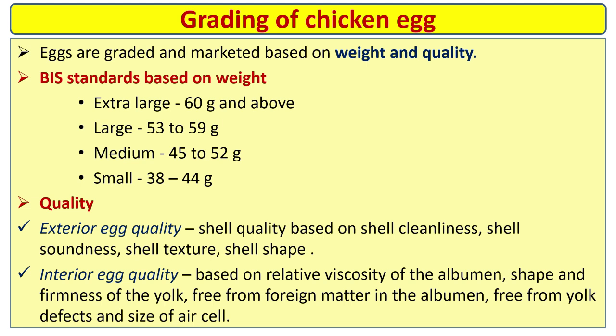Grading of chicken eggs: eggs are graded and marketed based on weight and quality using BIA standards. Based on weight: extra large is 60 grams and above, large is 53 to 59 grams, medium is 45 to 52 grams, small is 38 to 44 grams.